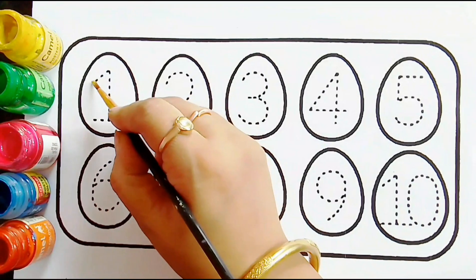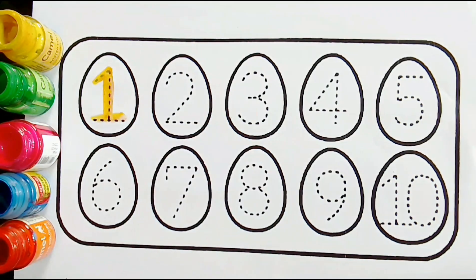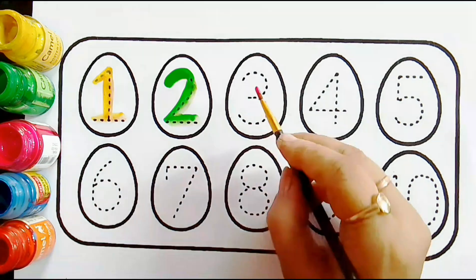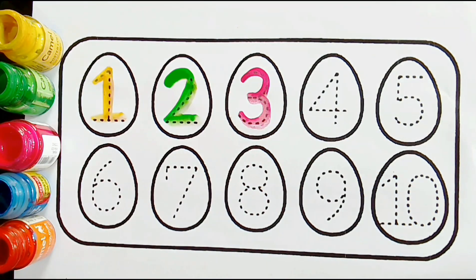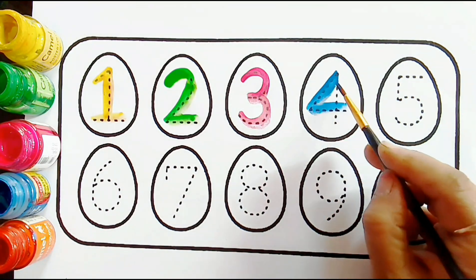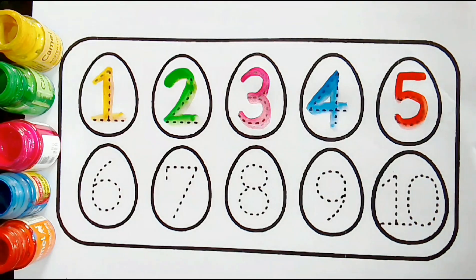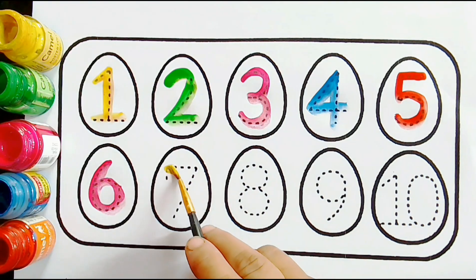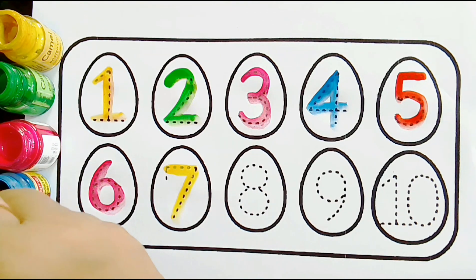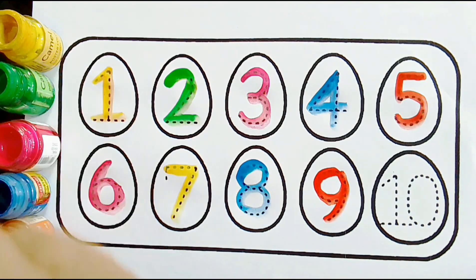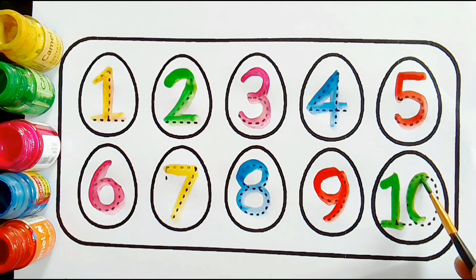Birds. One. Two. Three. Four. Five. Six. Seven. Eight. Nine. Ten, one zero, ten.